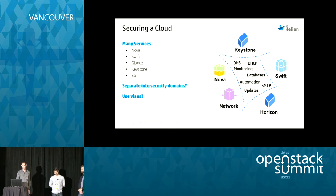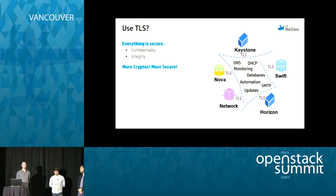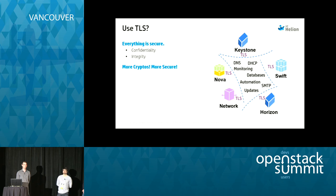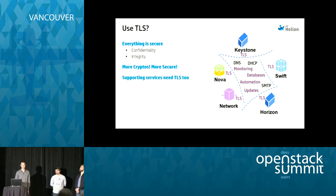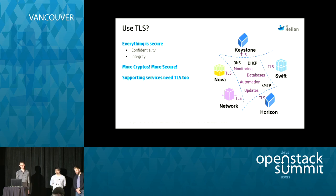This doesn't work out so well, so the next step is your security guide tells you to turn on TLS, because everyone knows you just turn on TLS. This makes everything confidential and secure — more crypto has got to be better, right? Unfortunately, all the supporting services also need TLS, although there are some exceptions. Turn all of that on and it's all happy, except TLS needs some supporting infrastructure of its own.